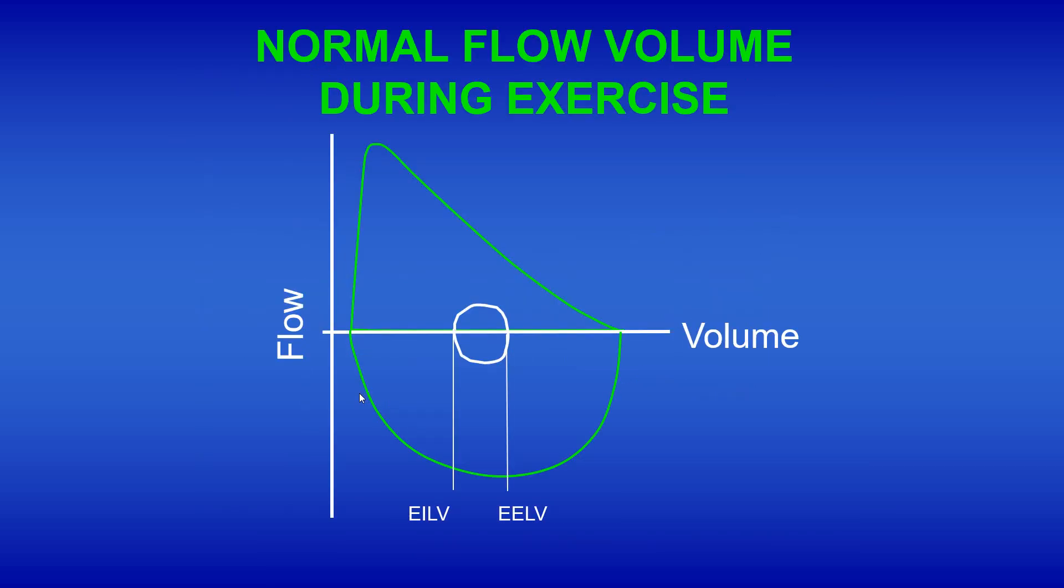Okay so normal flow-volume loop during exercise. Here's our resting loop. We get someone to start exercising we would see that we would expand both tidal volume and the flow rate through an increase in respiratory rate in both directions. So the flow and the volume both get bigger. As exercise progresses we see that continue but if you start having a look at where we might be limited here we can see that our exercise ventilation is getting very close to this maximum envelope.